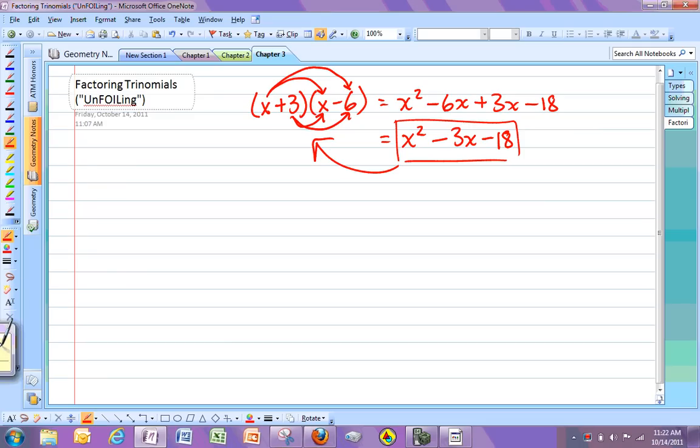So, notice this one's x squared. And for all the ones that I'm going to give you today, they're all going to be x squared. And so, x times x is what gives you this first term right here. So if there's an x squared here, you know you're going to have an x here and an x over here too.